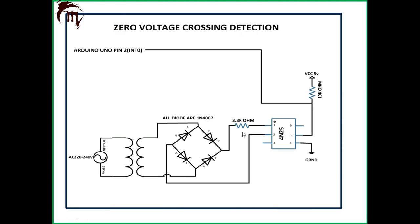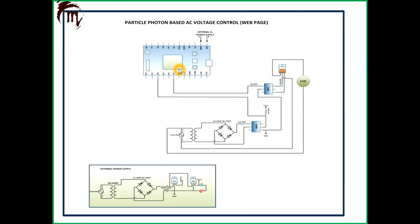Let's check the circuit diagram. This is your zero voltage crossing detection circuit — here I'm using pin number 2 of the Particle Photon. This is the ZVC, your zero voltage crossing detector, and this is your firing angle setup. We provide a delay to get the firing angle which fires the TRIAC BT136, and this voltage controls the speed of your fan or the intensity of your bulb — demonstrating how you can control AC voltage.